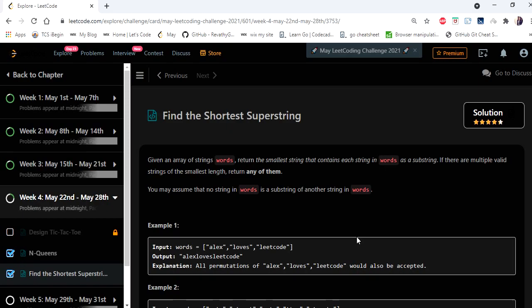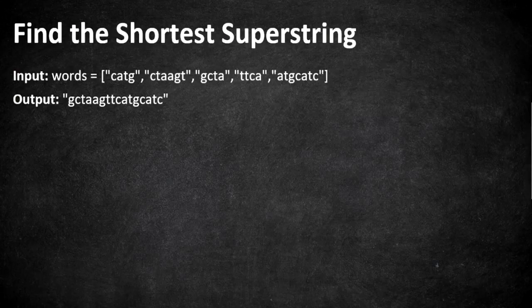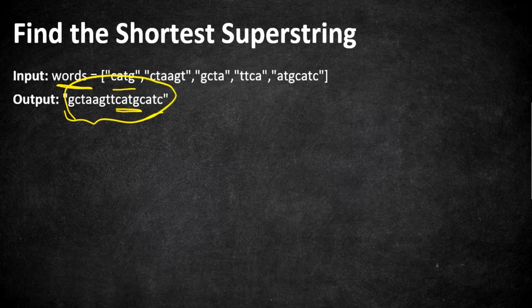Let's understand this problem with an example. We have to return a string which consists of all the strings included in the given words array. For instance, 'catg' will appear here, and every string will be constructed inside this particular string, which should be the smallest possible out of all possible solutions.